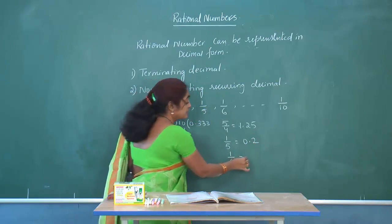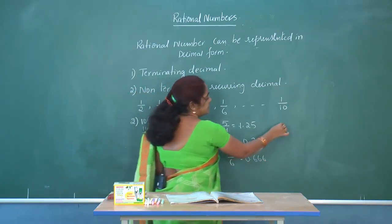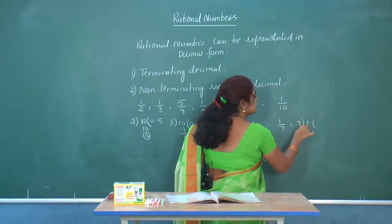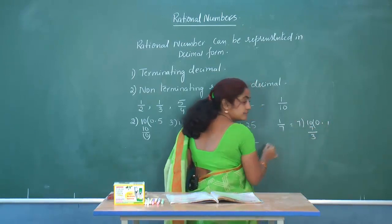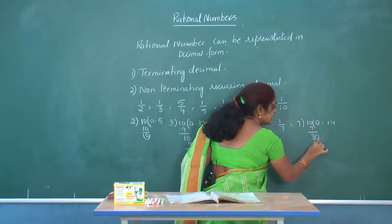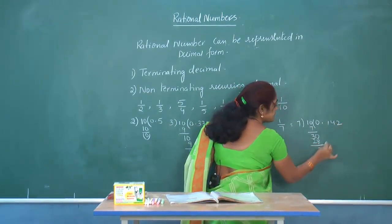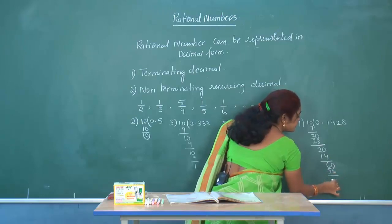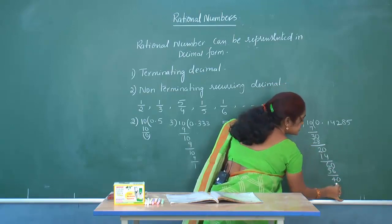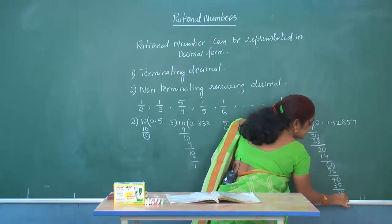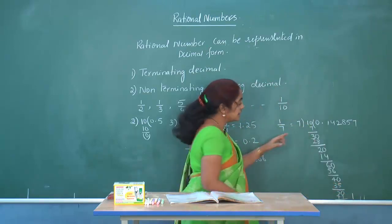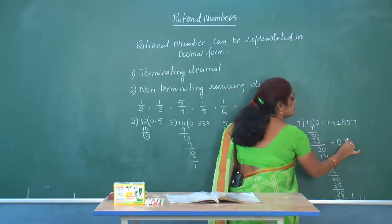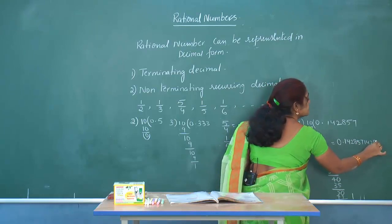For 1/6 as a decimal form, we get 0.666... and so on. Let's also check 1/7. Dividing 1 by 7: 7 ones are 7, remainder 3; then 7 fours are 28, remainder 2; 7 twos are 14, remainder 6; 7 eights are 56, remainder 4; 7 fives are 35, remainder 5; 7 sevens are 49, remainder 1 — and then it repeats. So 1/7 = 0.142857142857..., continuing indefinitely.